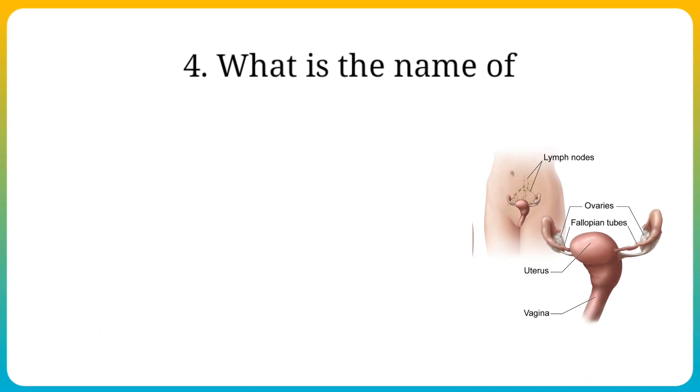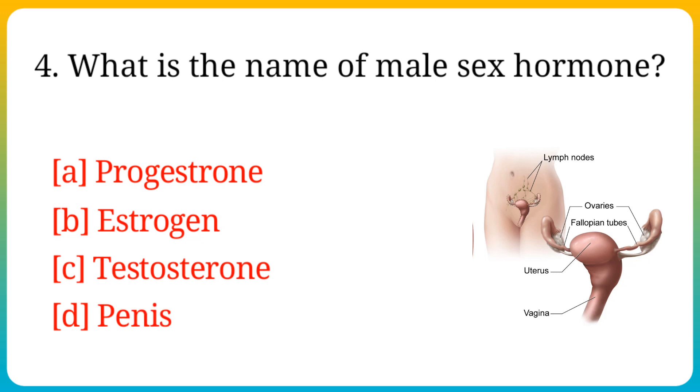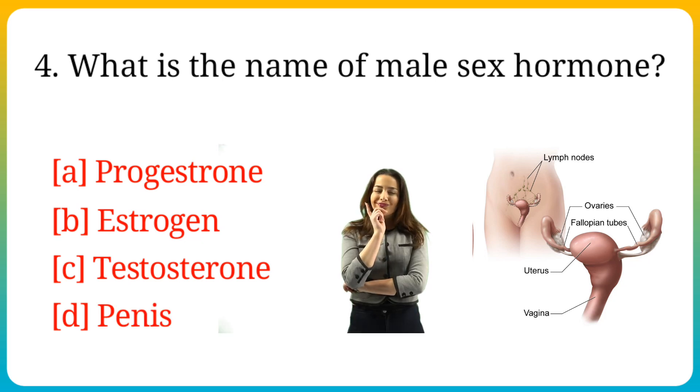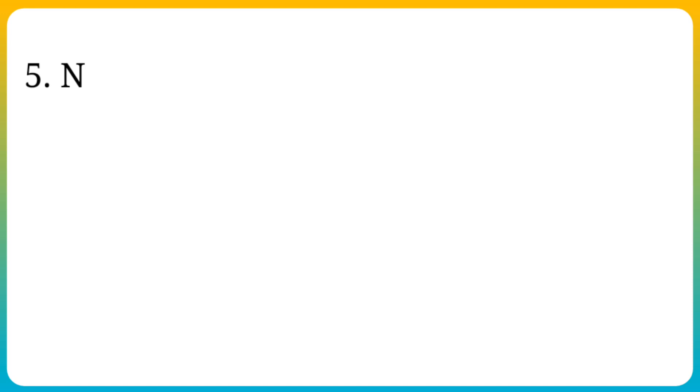Question number 4. What is the name of male sex hormone? Options are: A. Progesterone, B. Oestrogen, C. Testosterone, D. Penis. Answer is option C. Testosterone.